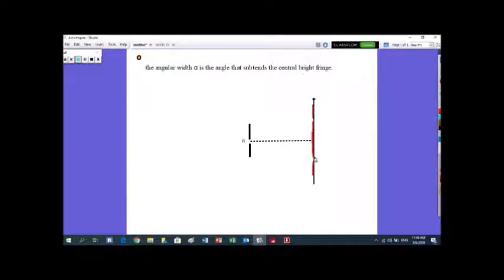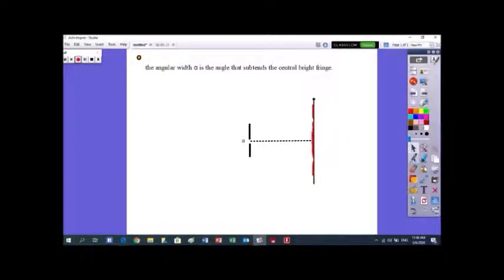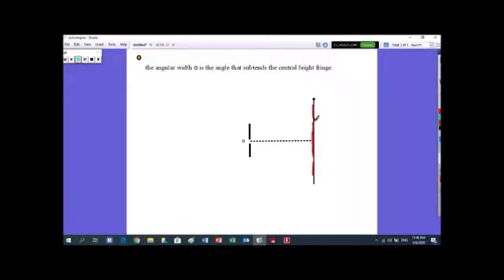Here is the central bright fringe. You know that the central bright fringe is surrounded by the first two dark fringes. Here is the first dark fringe, I mean n equals 1, and here is also the first dark fringe but in the negative side, I mean n equals minus 1. We call this the width of the central bright fringe.